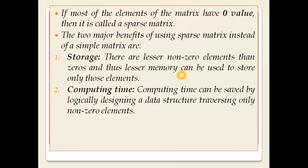So what is a sparse matrix? If most of the elements of a matrix have zero value, then we call it a sparse matrix. You already know what a matrix is — we have rows and columns, and that cross-section forms a matrix. But if the maximum number of elements in that matrix have zero value, we call it a sparse matrix.